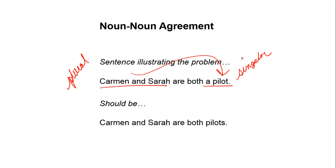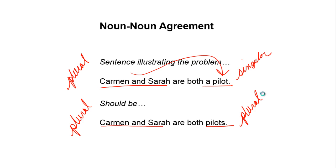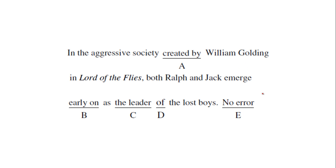So how should this sentence be revised? 'Carmen and Sarah are both pilots.' Carmen and Sarah, which we've established is plural, now uses 'pilots,' which is also plural. This is essentially what we're going to be doing on the next four official SAT practice test problems — making sure that nouns agree in number with the nouns that they refer to.